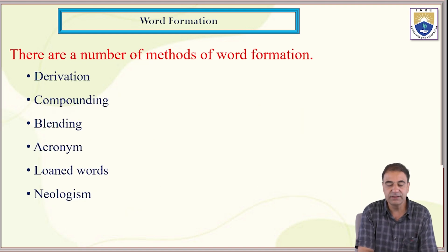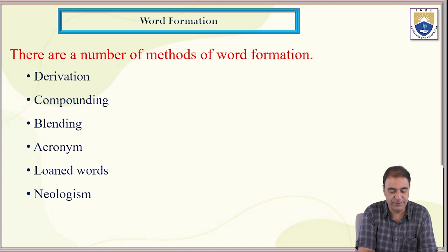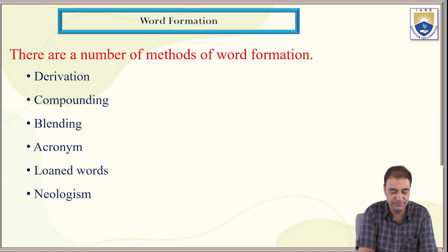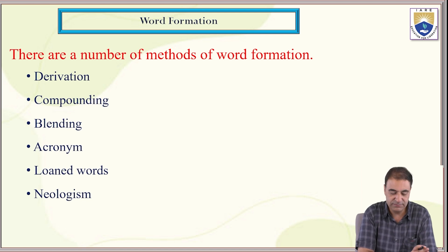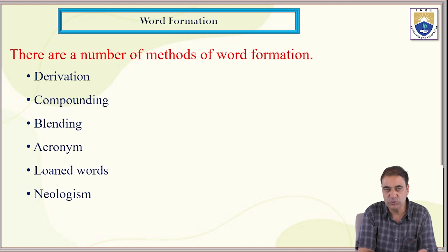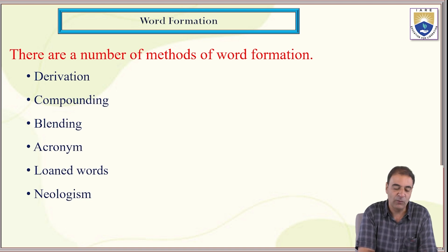Here we will see how word formation is different from semantic change and what the different types of word formation are. There are a number of methods of word formation: the first one is derivation, then we have compounding, blending, acronym, loanwords, and next, neologism. We will take these one by one.